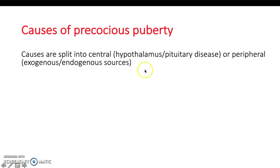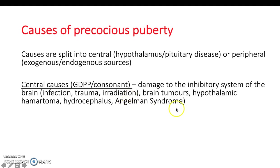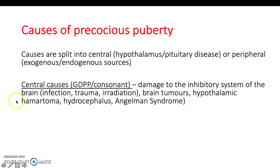The underlying cause involves a defect in either the hypothalamus-pituitary axis for central causes, or exogenous or endogenous sources for peripheral causes. Central causes are also termed consonant or gonadotrophin-dependent precocious puberty (GDPP). It involves damage to the inhibitory system of the brain. A hypothalamic hamartoma that secretes GnRH is one such cause — an increase in GnRH leads to increased production of sex hormones, causing precocious puberty.